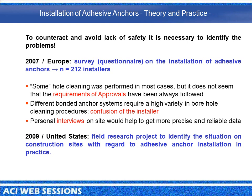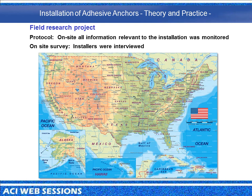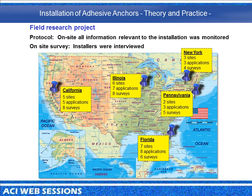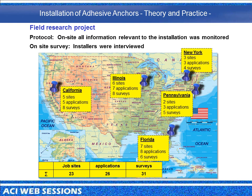Based on this study, in 2009 in the United States, a field research project was started to identify the situation on job sites with respect to the installation of these anchors. The project included two parts: on-site monitoring of all information relevant to installation recorded in a protocol, and on-site surveys interviewing installers about their professional and educational background, experience in fastening technology, general installation practices, and general opinion on adhesive anchors. In total, 23 job sites were visited, 26 applications were monitored, and 31 installers were interviewed across Illinois, Florida, California, and New York/Pennsylvania.